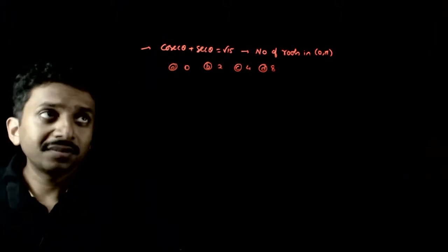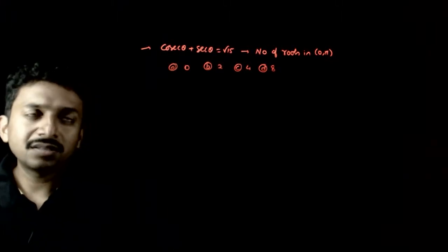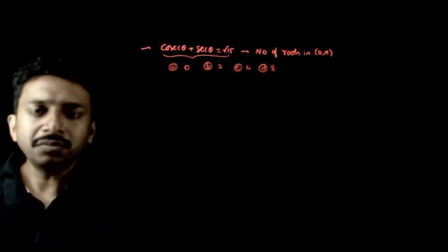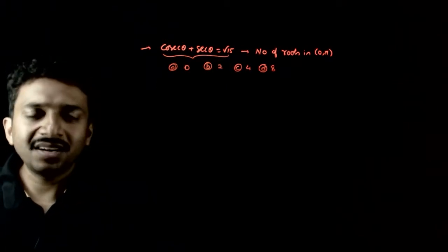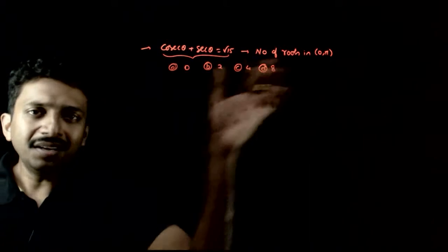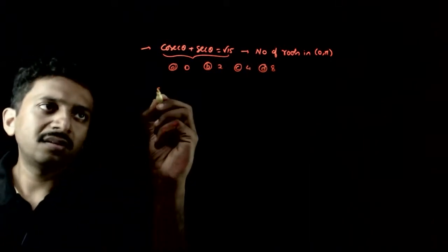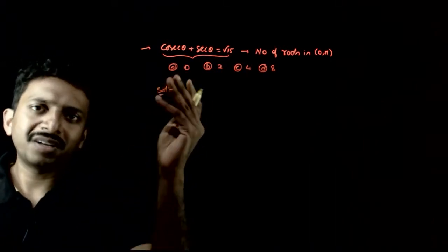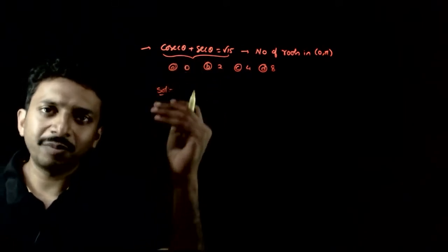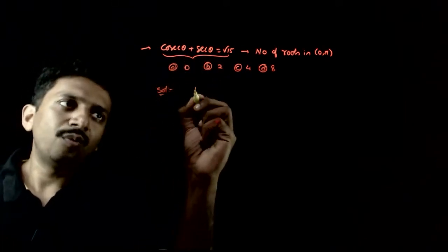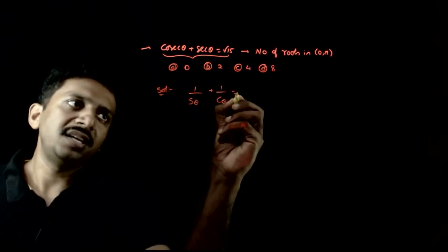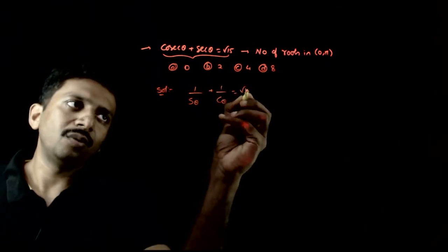Welcome students. In this question, we are asked to find the number of solutions to cosecant theta plus secant theta equals root 15 in 0 to pi. It is a very straightforward trigonometric equation. Cosecant theta plus secant theta is 1 by sin theta plus 1 by cos theta equals root 15.